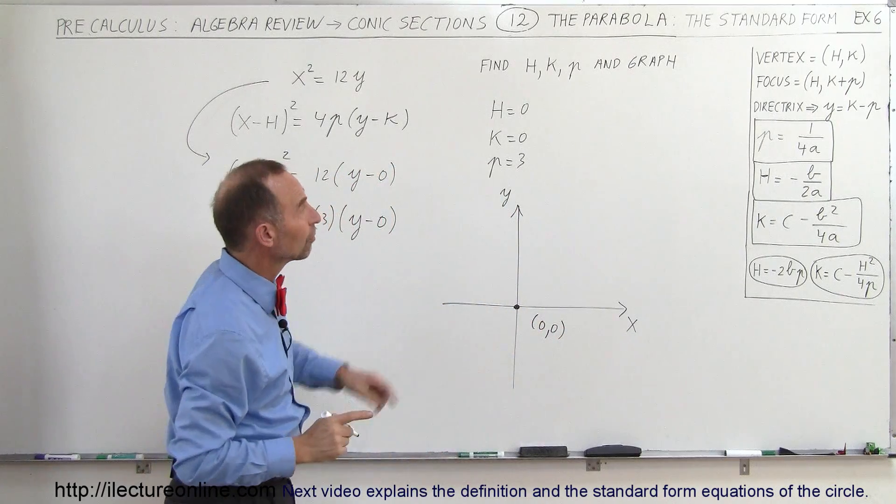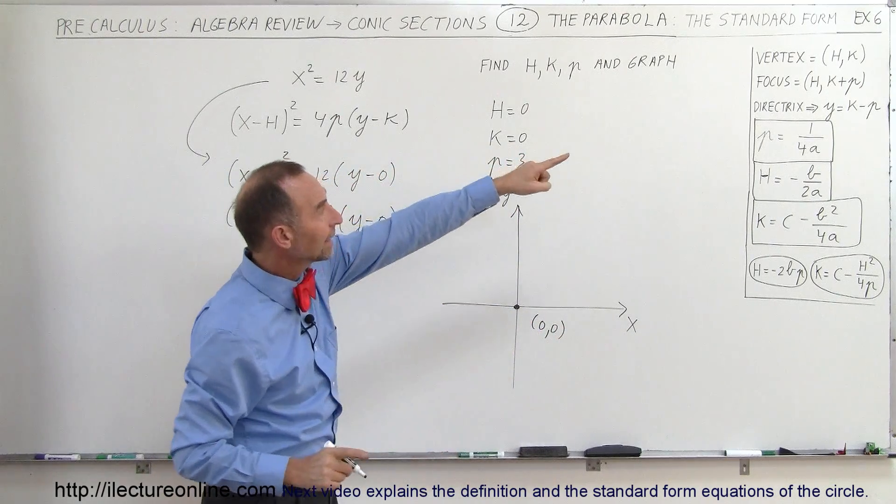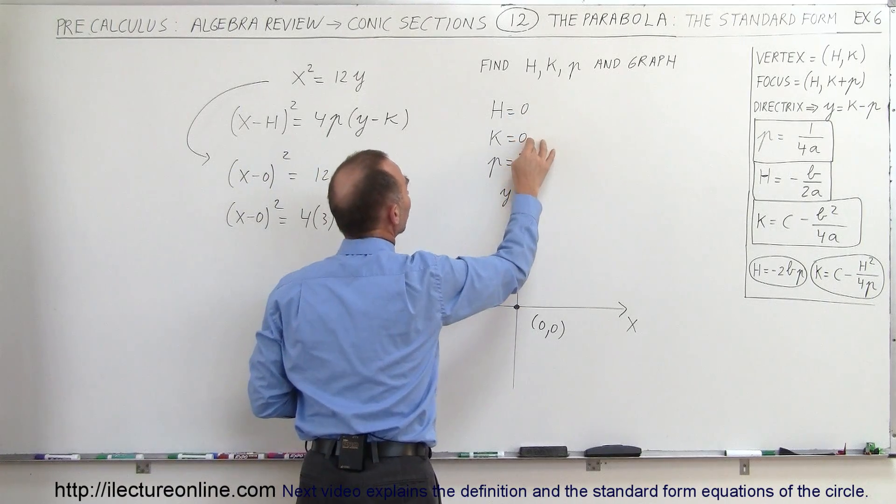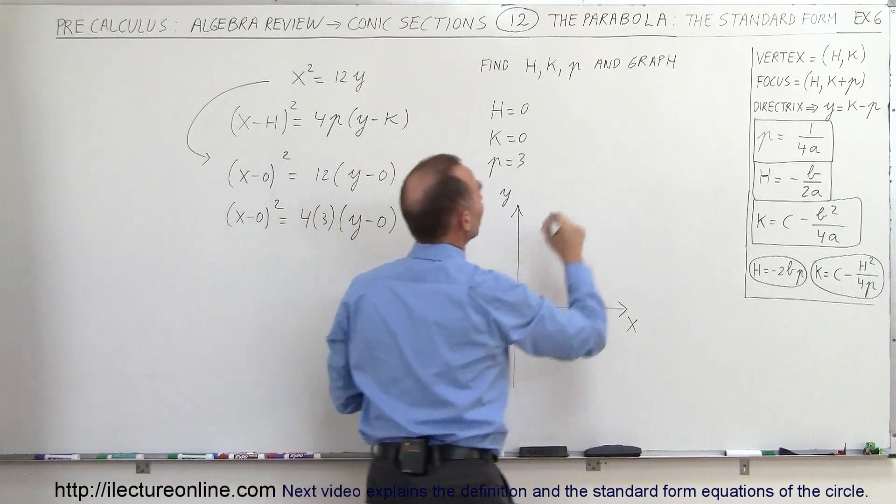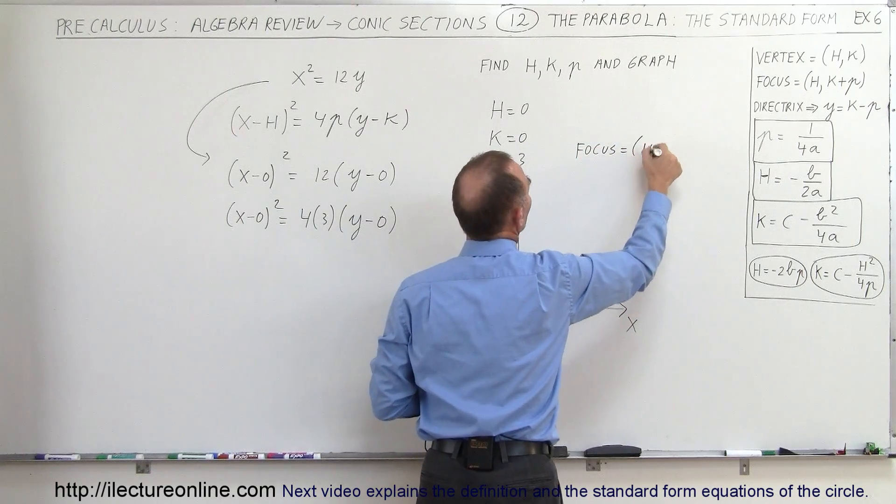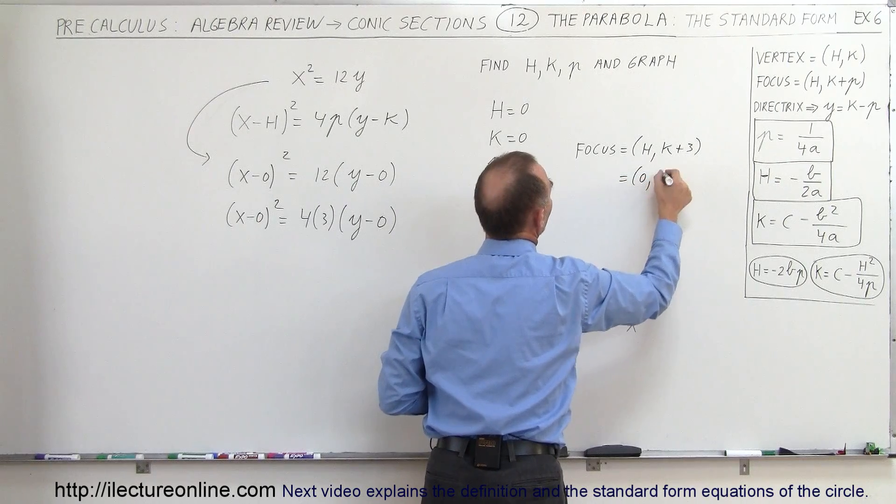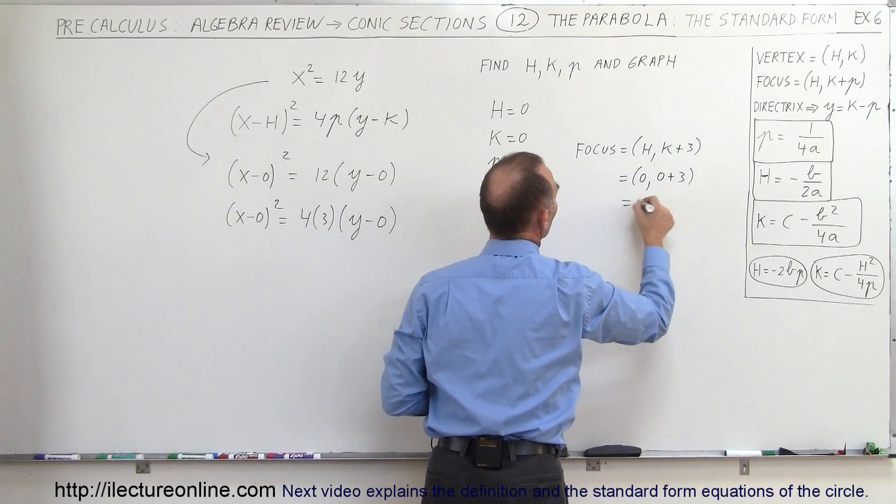Secondly, I want to find my focus. My focus is at h and k plus p. So h is 0, k is 0, p is 3, which means my focus, which equals h and k plus 3, is going to be at 0 and 0 plus 3, or the coordinates (0, 3).